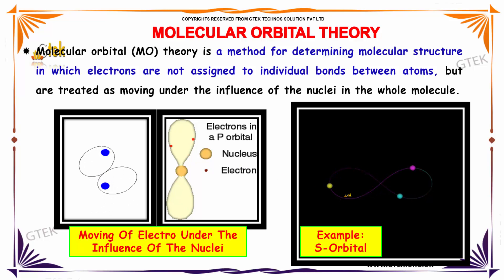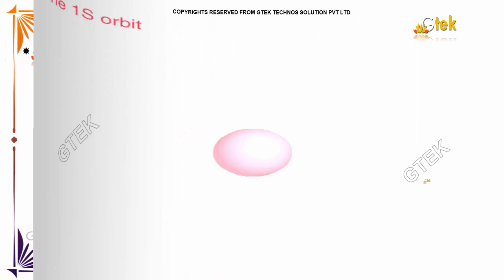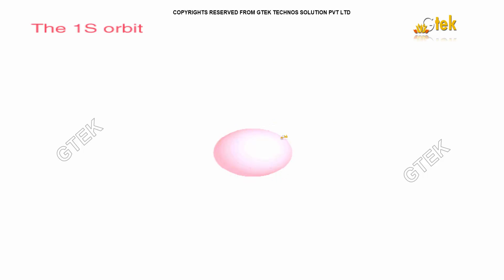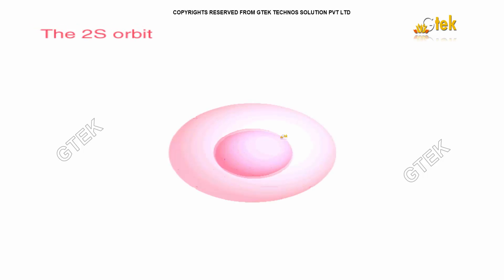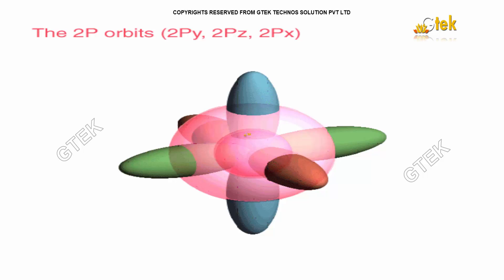Here is a typical example of an S-orbital. An orbital is nothing but the path through which the electrons are revolving. I am trying to show you the three-dimensional orbital design of an atom. Here is the 1S-orbital, and now I have the 2S-orbital and the 2P-orbital.